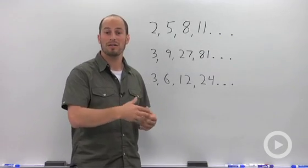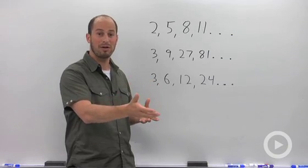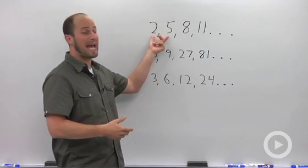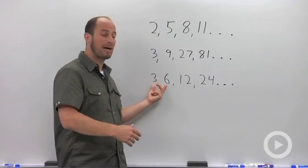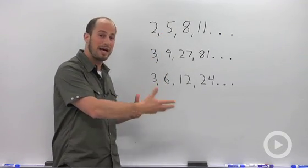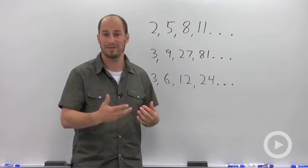In these examples our numbers are always getting bigger, but there's no reason our numbers couldn't be getting smaller as well. Here I added 3, I could have just as easily subtracted 3. Here we multiplied by 2, we could have just as easily divided by 2. As long as we do that consistently, what we're getting is a sequence of numbers.